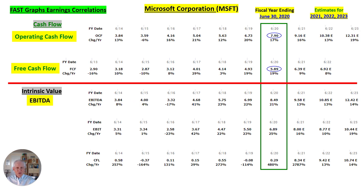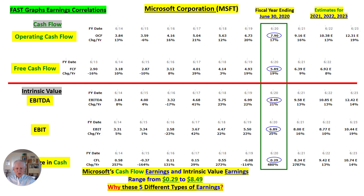EBITDA is a number that's closer to cash flow — not quite, but closer. It's a very important number in finance. It's not a GAAP number, but this number comes up to $8.49 for Microsoft as of the end of their fiscal year. EBIT — earnings before interest and taxes — is less, at $6.89. And last, the change in cash: cash changed by $0.29. So Microsoft's cash flow earnings and intrinsic value earnings range from $0.29 all the way up to $8.49.